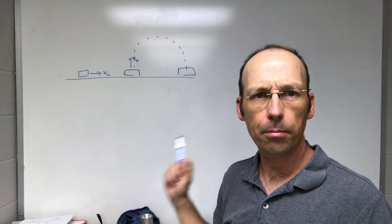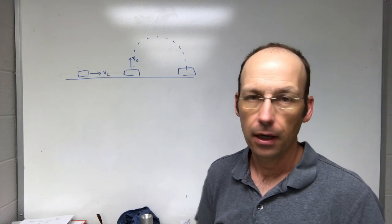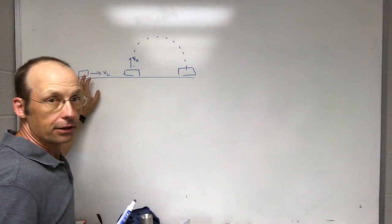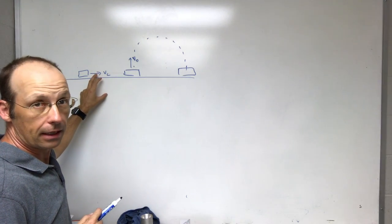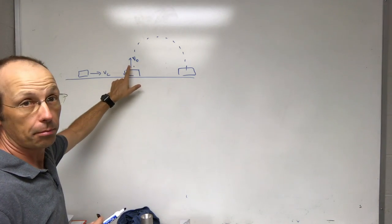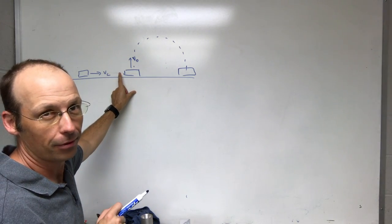So why does the ball land back in the cart? Here's my short explanation with a little bit of physics. Here I have a cart moving with some speed in the x-direction, v_c, at a constant speed, and then it launches the ball straight up relative to the cart. It's not straight up.